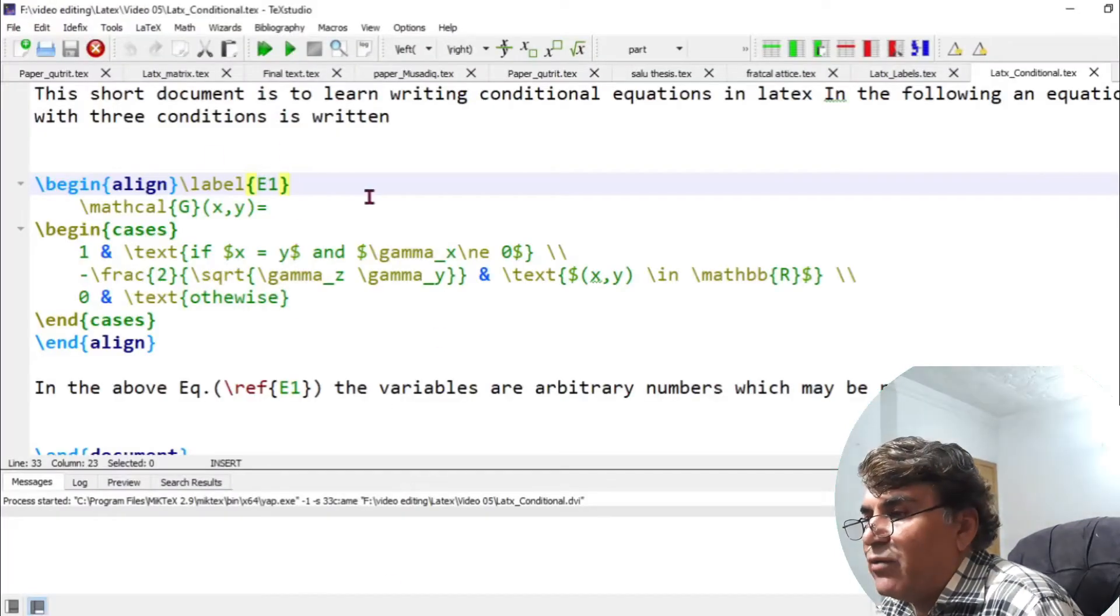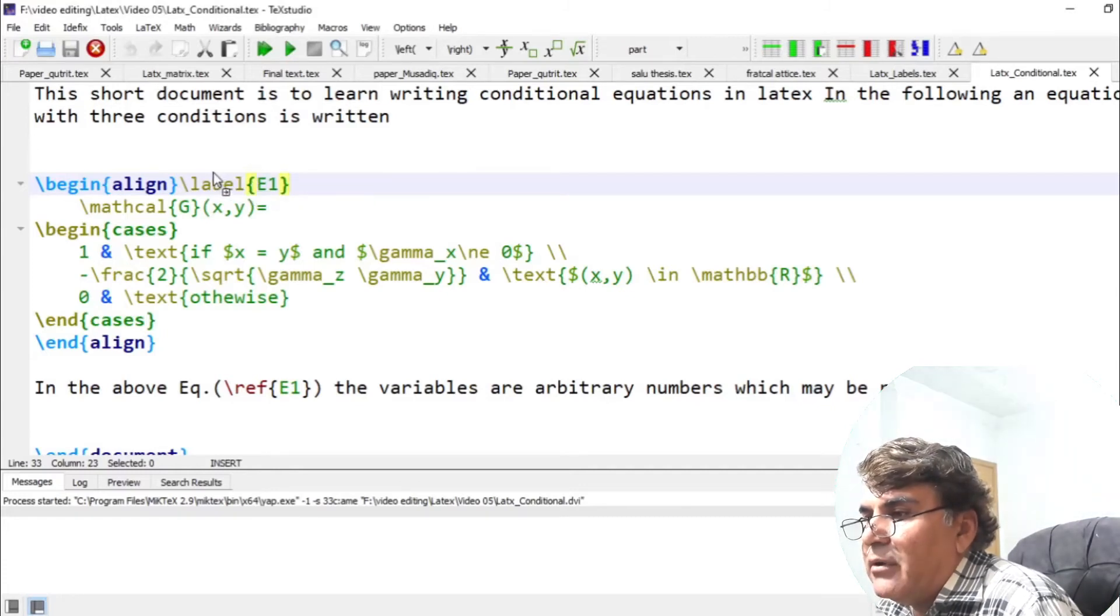Now let us understand what I have done over here. Here I have added the label to the equation. You can do that by using the label command and putting a unique key inside the curly braces, which in fact is the argument of the label command.